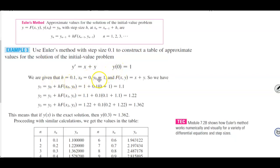And here we are given that h is equal to 0.1, x naught is 0, y naught is 1, and f(x, y) is equal to x plus y. So we have the following.